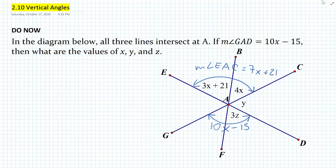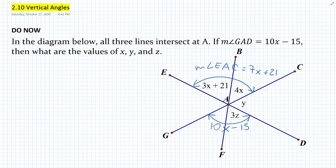Where do we get the 7x? Well, we're just adding up the 3x and the 4x, and we also add the 21. Why are we looking at angle EAC? Well, angle EAC and angle CAD are a linear pair, so that means they're supplementary. But we also know that angle GAD and angle CAD are supplementary.